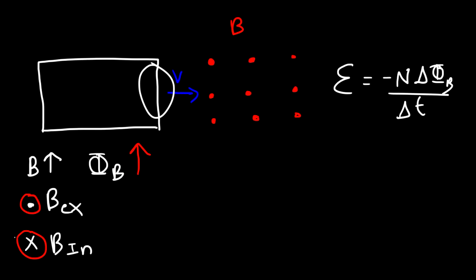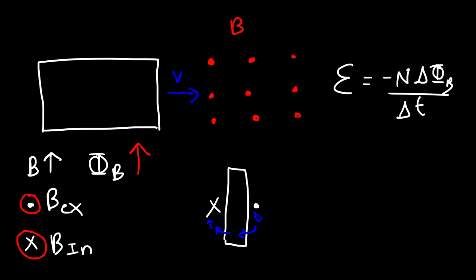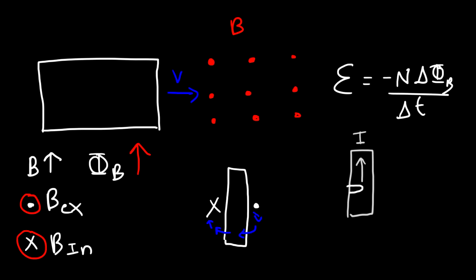Now let's focus on this segment of the wire. The current is going to flow such that on the right side we have an X, and on the left side a dot, so the magnetic field flows in this direction. Let's review the right-hand rule: wrap your hand around a pen and point your thumb in the direction of the current. Your fingers will follow the direction of the magnetic field generated by the current in the wire.